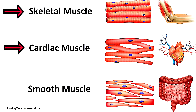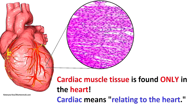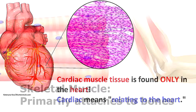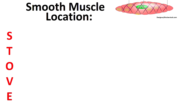Finally, let's talk about the third and final type of muscle tissue: smooth muscle tissue. Smooth muscle is quite different from the other two muscle types, however it also shares some similarities. Whereas cardiac muscle is only located in the heart and skeletal muscles mostly attach to bones, smooth muscle tissue is found throughout the body. To remember the main locations, I created a simple mnemonic — just remember the word STOVE.